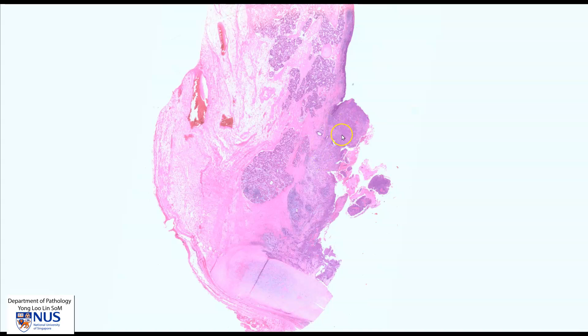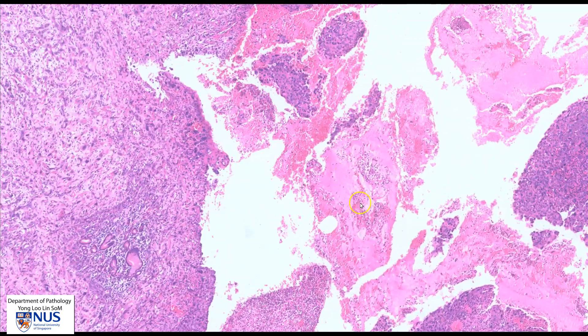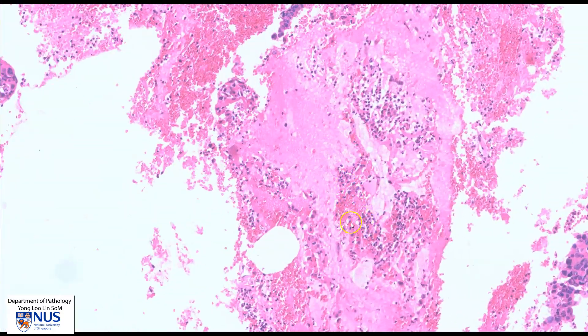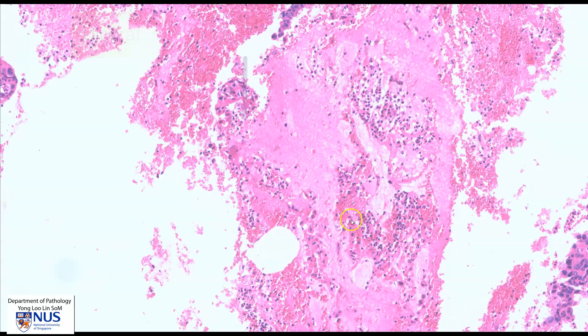Let's look more closely at the tumor, and we can see that there is a mass in this region which has areas of hemorrhage and ulceration. Here we have some fibrin due to mucosal ulceration, and this can be also causing some bleeding, and therefore the patient may have hemoptysis or the coughing of blood.